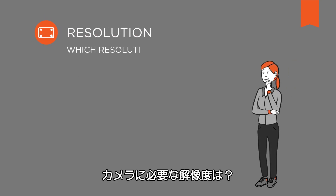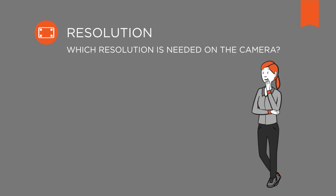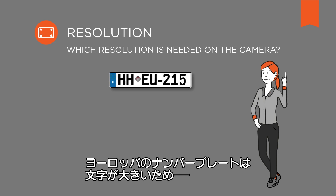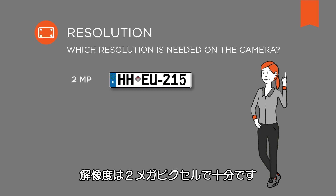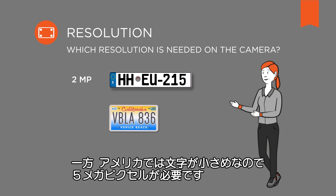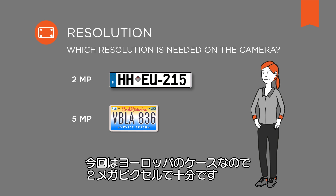Which resolution is needed on the camera? In Europe, the numbers and letters on license plates are printed quite large — 2 megapixels of resolution are enough. In the USA, by contrast, 5 megapixels are typically needed, since the numbers and letters are smaller. The highway in this case is in Europe, so 2 megapixels are enough.